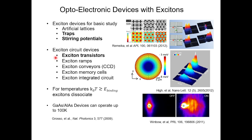Excitonic circuit devices include excitonic transistors, excitonic ramps analogous to diodes, conveyors analogous to CCDs, memory cells, and integrated circuits. The devices I worked on are traps, stirring potentials, and transistors. The transistor in the upper right corner works by controlling the flux of excitons via other exciton fluxes, producing what we call excitonic gain.